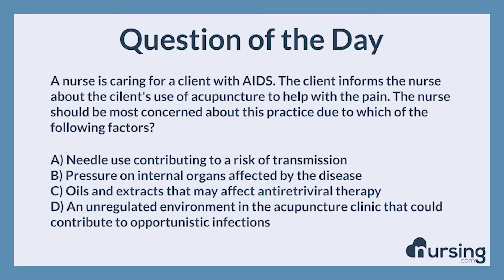The nursing category is hematology and immunology. The NCLEX category is reduction of risk potential. A nurse is caring for a client with AIDS. The client informs the nurse about the client's use of acupuncture to help with the pain. The nurse should be most concerned about this practice due to which of the following factors?